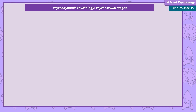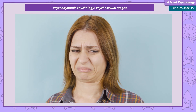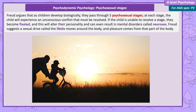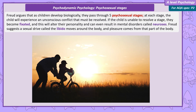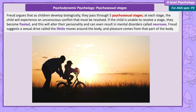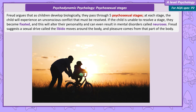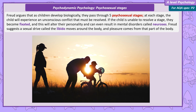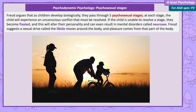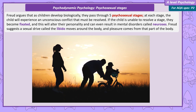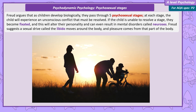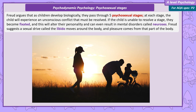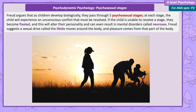Psychosexual stages. Freud argues that as children develop biologically, they must pass through five psychosexual stages, and how they experience these stages will influence their unconscious minds as adults. At each stage, the child will experience an unconscious conflict that must be resolved. If the child is unable to resolve a stage, they become fixated, which will alter their personality and can result in mental disorders called neuroses. These stages are linked to body parts, because Freud suggests a sexual drive called libido moves around the body, and pleasure comes from that part.